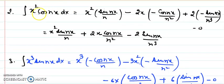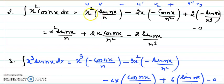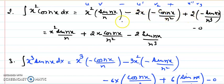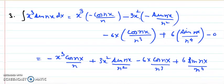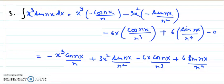For ∫ x² cos(nx) dx, u = x², v = cos(nx). Using the tabular method: first term is x² · sin(nx)/n, second term (minus) is 2x · (−cos(nx)/n²), and third term (plus) is 2 · (−sin(nx)/n³). After applying the alternating signs correctly and keeping integration terms in brackets, you combine the negatives and positives to write the final answer. This same approach extends to higher powers. I hope you have understood this topic.